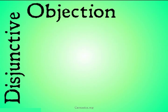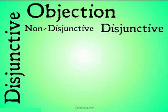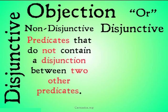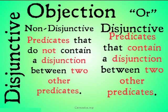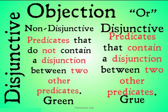An objection that was leveled against Goodman, which he did respond to, was the disjunctive objection. Basically this says that there are disjunctive and non-disjunctive predicates — that's just a complicated way of saying that there is an OR involved in the predicate if it's disjunctive. A non-disjunctive predicate is defined as one that does not contain a disjunction between two other predicates, such as green or blue, whereas a disjunctive predicate does contain an OR between two other predicates. Clear examples would be that green is non-disjunctive whereas grue is in fact disjunctive.